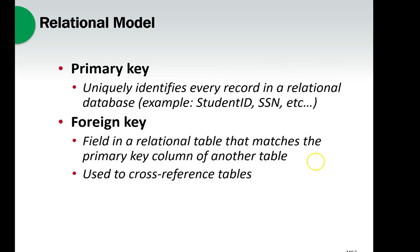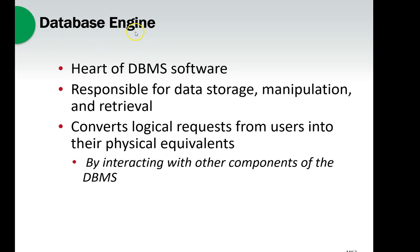In every table there needs to be some unique identifying data. At Grossmont College it's the student ID — no two students share the same one. For vehicles it might be the vehicle identification number or driver's license number; at the bank it's your account number. Every table has to have some way to uniquely identify each record. We'll also get into the concept of foreign keys — for example, one person can own multiple cars, or one student ID can be linked to multiple course section numbers. We'll go into more depth on this when we study Microsoft Access.